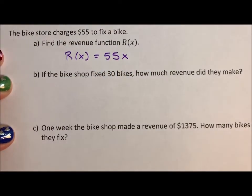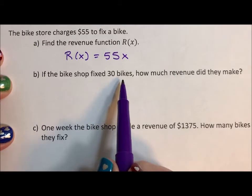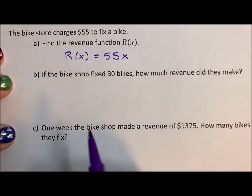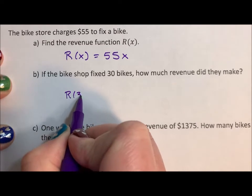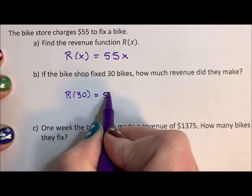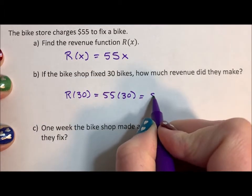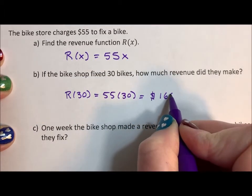That's how much money they make for fixing a bike. If the bike shop fixed 30 bikes, how much revenue did they make? Well, the revenue for 30 bikes, again not multiplication, function notation, is 55 times 30. And 55 times 30 is $1,650.